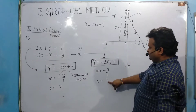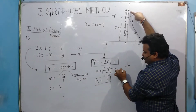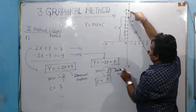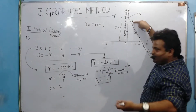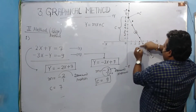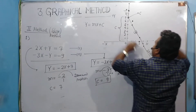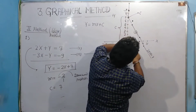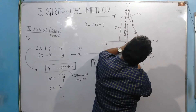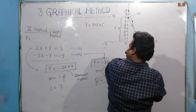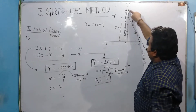Starting from this point, the negative sign means downward motion: 3 steps downward and 1 step rightward. I repeat this pattern — 3 down, 1 right — multiple times to get the required points. With the help of these points, I draw the line which represents the equation 3x + y = 9.